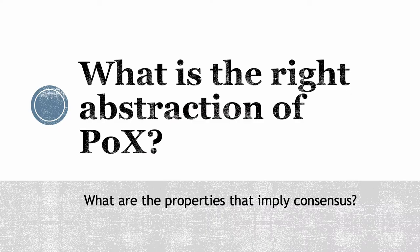In this work, we're going to look for an abstraction for this lottery process that captures what happens with a lot of different kinds of proof-of-x, and we're going to look for some minimal properties of the abstraction and some minimal assumptions on a network that will imply consensus.